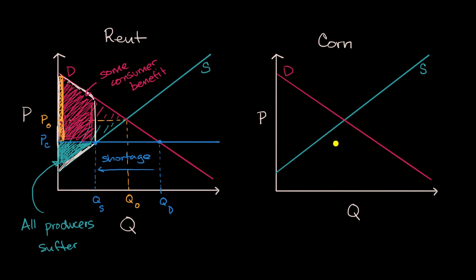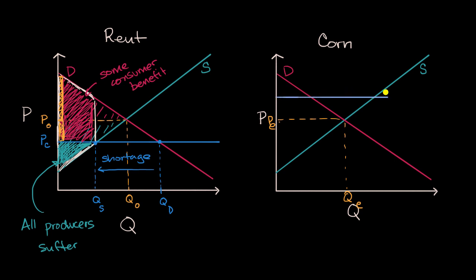Now let's move over to another market — let's say the corn market. Once again, we have our equilibrium price and our equilibrium quantity. But let's say in this situation the corn farmers are able to organize and lobby the government, saying they really suffer when there's low corn prices. So they want to institute a price floor. The government agrees and institutes a price floor: the price cannot go below this level.